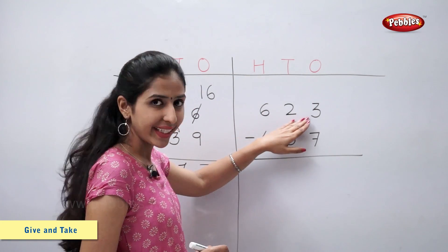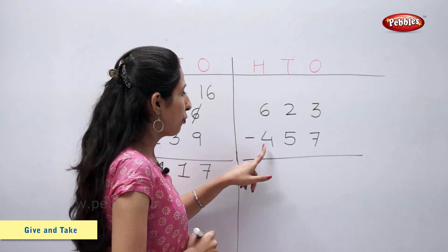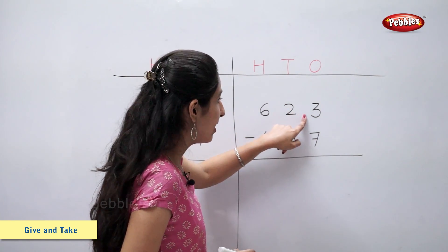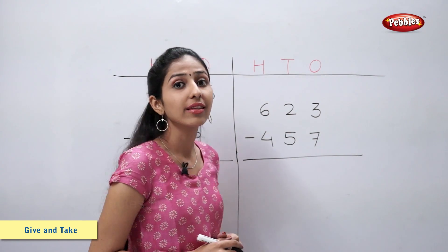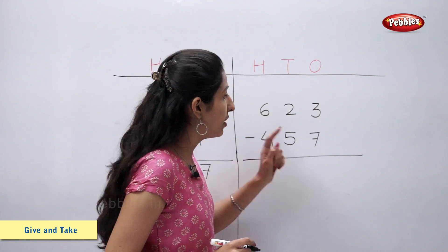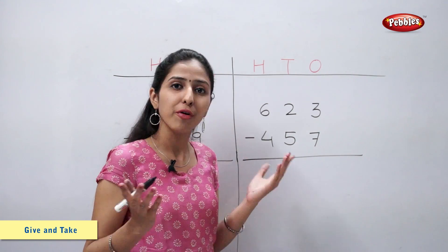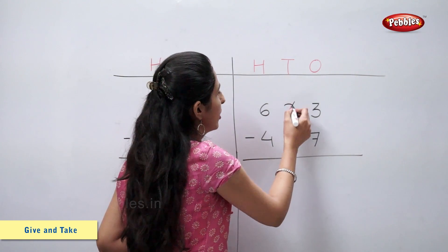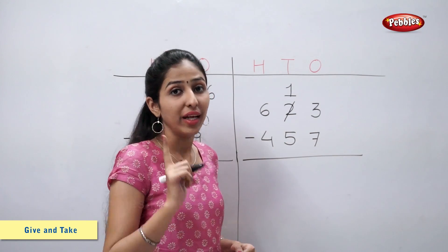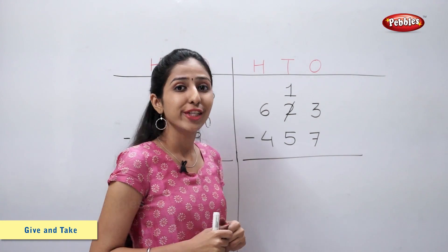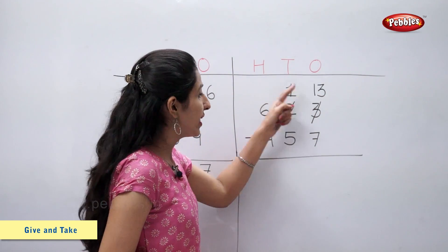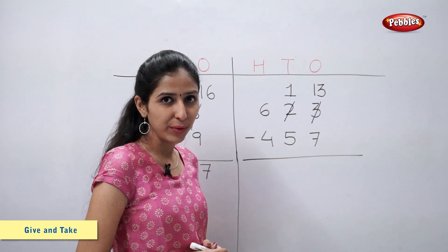Six hundred and twenty-three minus four hundred and fifty-seven. Let's subtract ones first. Three minus seven is not possible. We cannot subtract seven ones from three ones, so we will borrow one ten. Two tens becomes one ten. Three plus ten is equal to thirteen, so three becomes thirteen. Thirteen minus seven is equal to six.